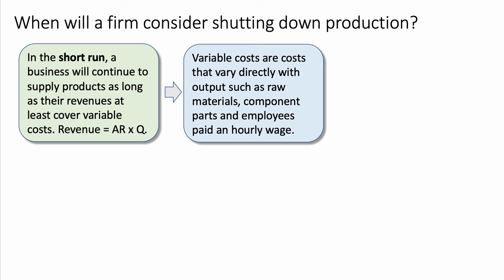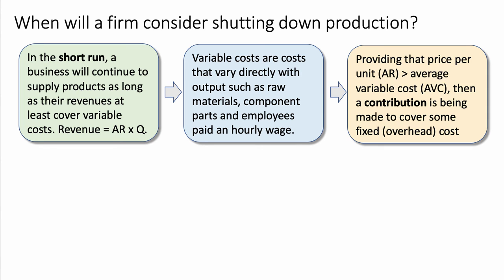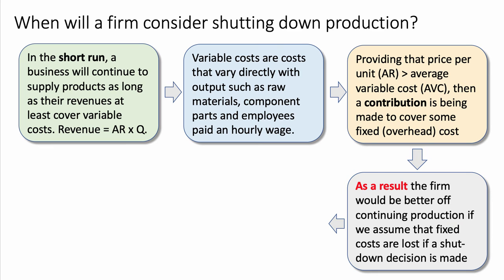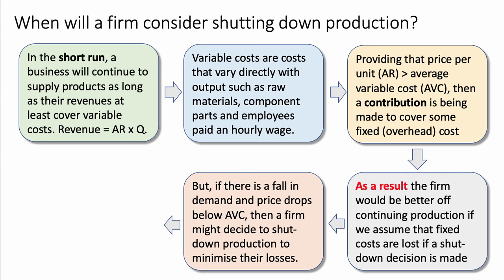Firms have to cover variable costs in the short run. Providing that the price per unit they're charging is greater than the average variable cost - AVC - then a contribution is being made to cover some of the fixed or overhead costs. As a result - a good bridging phrase to use in your chain of reasoning - the firm will be better off continuing production, if we assume that fixed costs are lost if they shut down, since fixed costs have to be paid anyway.